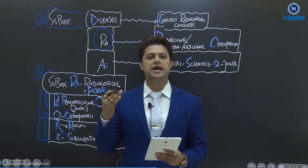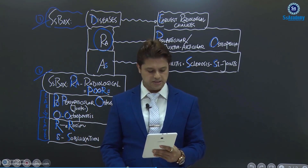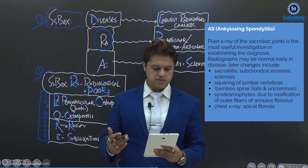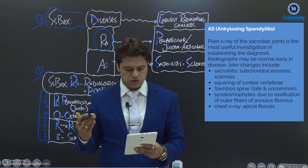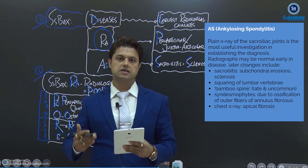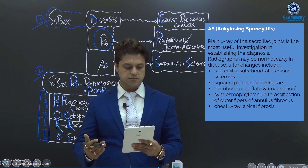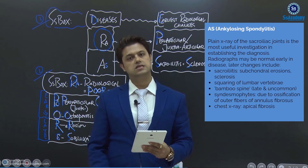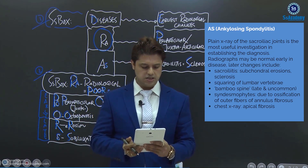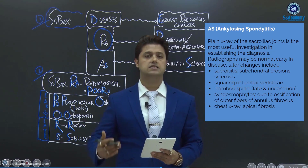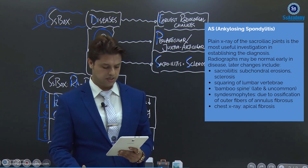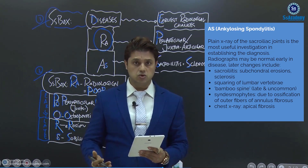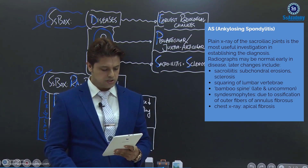I'd like to give you another box for ankylosing spondylitis radiological changes. The plain X-ray of the sacroiliac joints is the most useful investigation in establishing the diagnosis. Radiographs may be normal in early disease. Later changes include sacroiliitis — as I say, the earliest radiological change — that is evident by subchondral erosions and sclerosis. The squaring of the lumbar vertebrae, and bamboo spine — late and uncommon — and syndesmophytes due to ossification of the outer fibers of the annulus fibrosus.